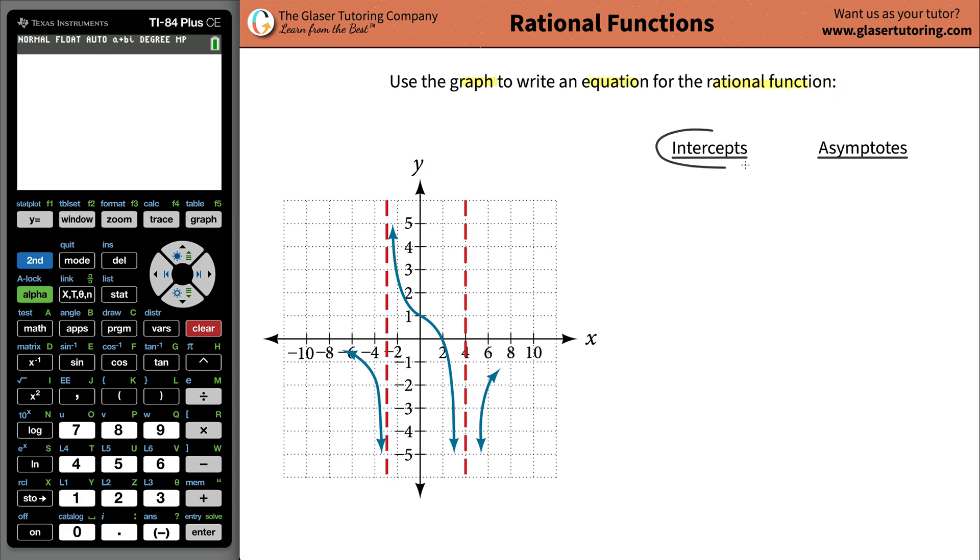Now two important things we're going to focus on are the intercepts and the asymptotes. Let's focus on the intercepts. There are two types: x-intercepts and y-intercepts. The x-intercepts are where the function crosses the x-axis. It appears there's only one location for that at x equals 2. So that's your x-intercept, 2 comma 0.